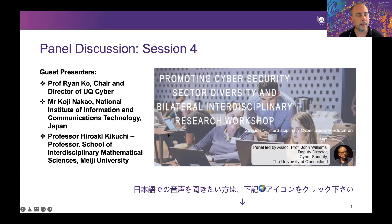Koji Nakao received a B.E. degree of mathematics from Waseda University in Japan in 1979. Since joining the National Institute of Information and Communications Technology that same year, he has been engaged in research on communication protocols and information security technologies. His current interests are security related to IoT, 5G, and supply chain. He holds a position of distinguished researcher at NICT and guest professor of Yokohama National University. He's been an advisor to the Japanese Cabinet Secretariat on Cyber Security since April 2017.